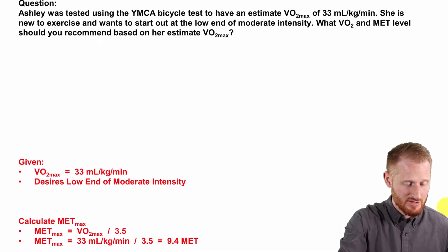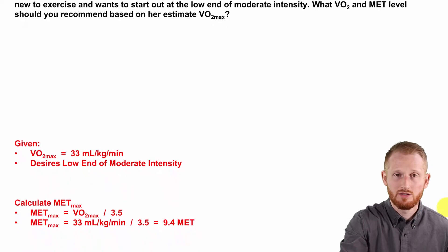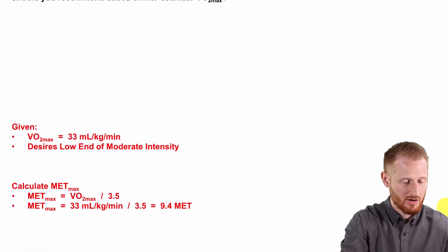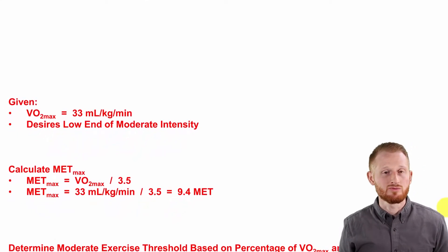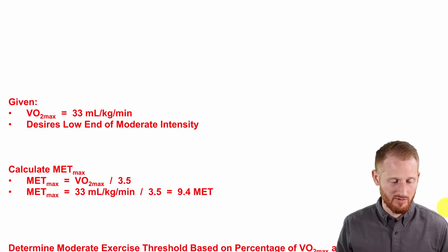So how do we get started here? I'm going to start by first calculating our MET max from our VO2 max. It's a fairly simple calculation. We're going to have to do it in order to do some of this anyways.